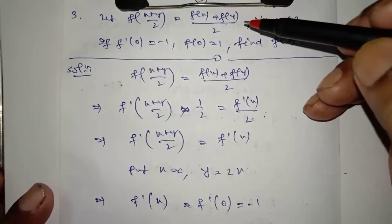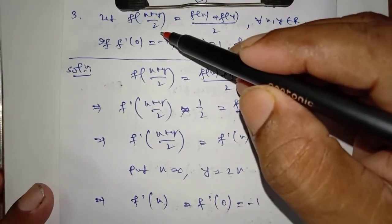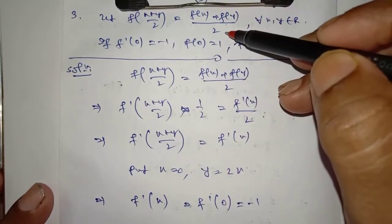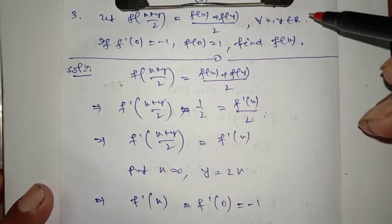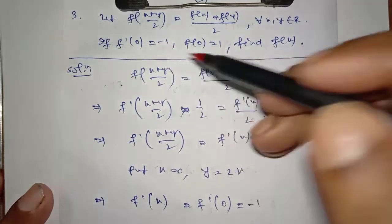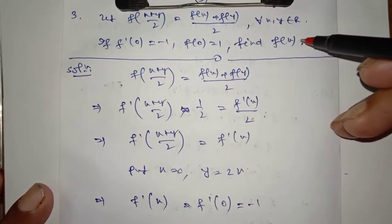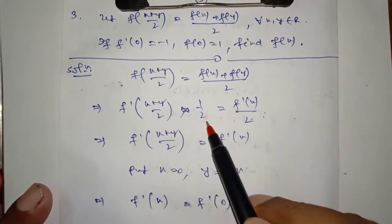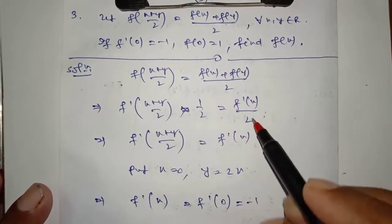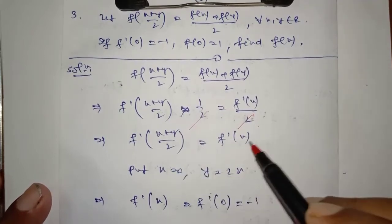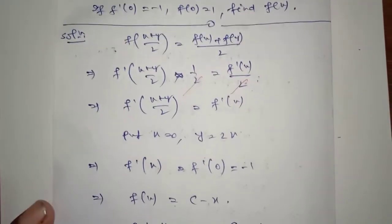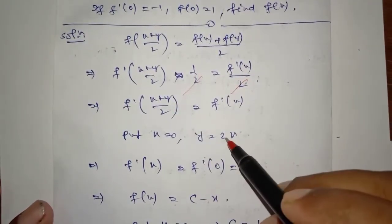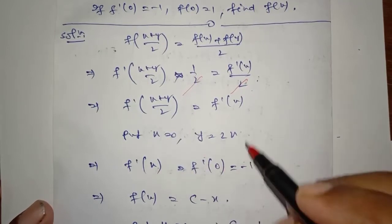Important questions from functional equations. Question 3: Let f((x+y)/2) = (f(x)+f(y))/2 for every x, y in R. If f'(0) = -1 and f(0) = 1, find f(x). Is function ko differentiate karo. So this is: (1/2)·f'((x+y)/2) = (1/2)·f'(x) — the 2s cancel. So f'((x+y)/2) = f'(x). Put x = 0, y = 2x. So f'(x) = f'(0), and f'(0) is given as -1.